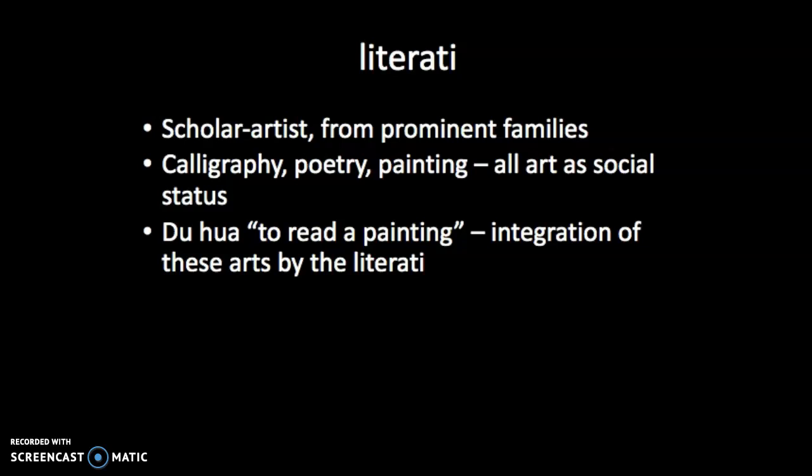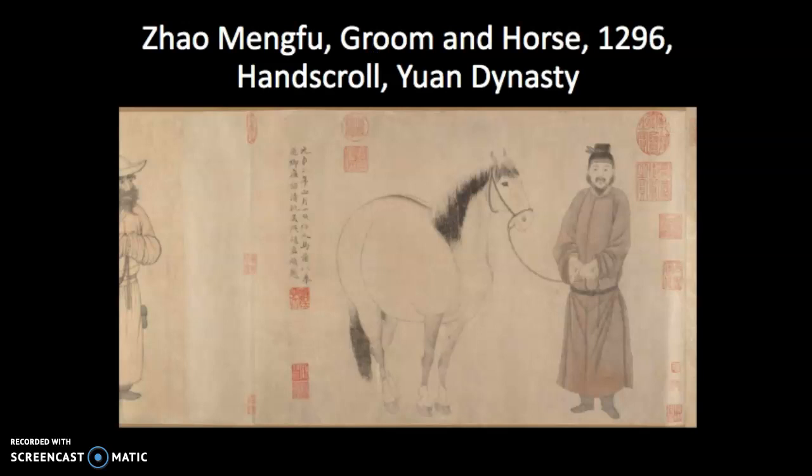I want to bring up another important concept: duhua, or 'to read a painting.' Duhua really connects to the notion of the three perfections in a single work of art. A Yuan literati work of art incorporates elements of calligraphy, poetry, and painting — these mediums do not exist independently of each other. Let's look at an example of a literati work that expresses duhua.